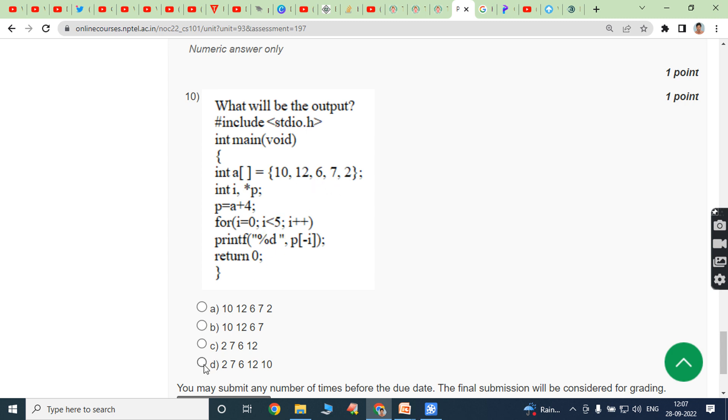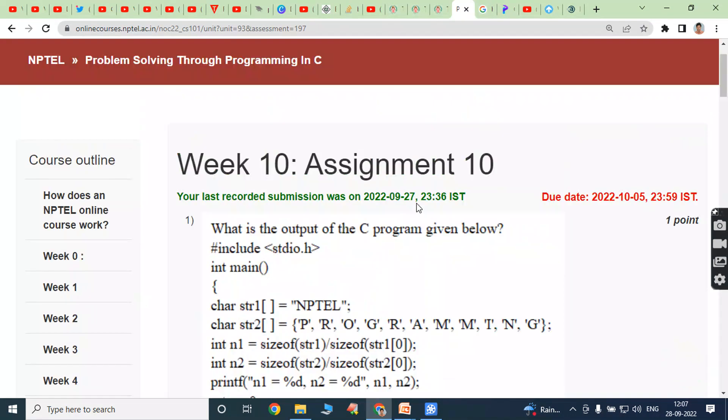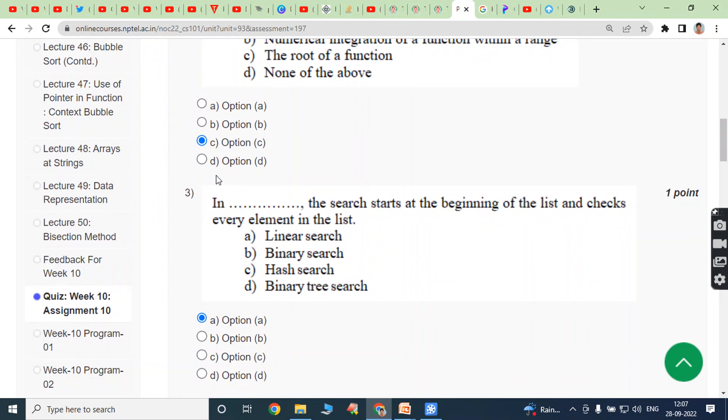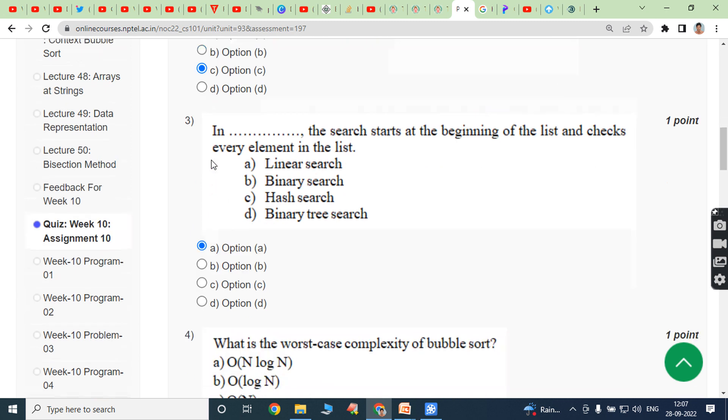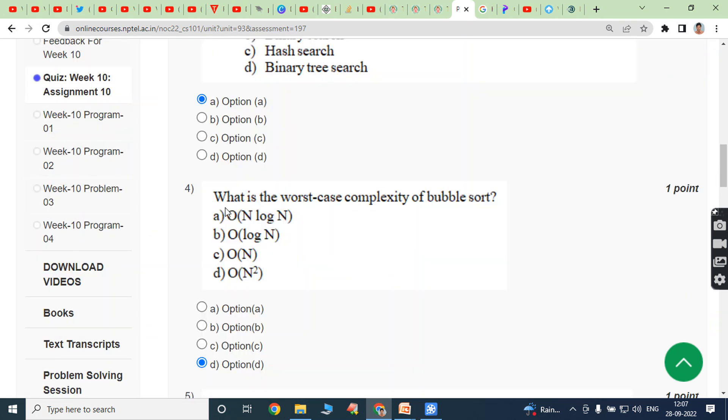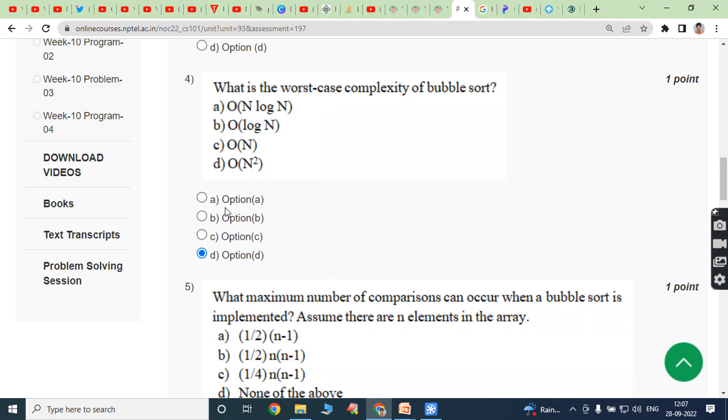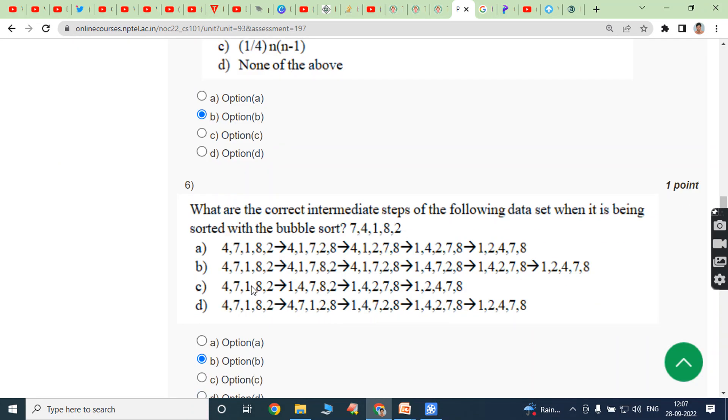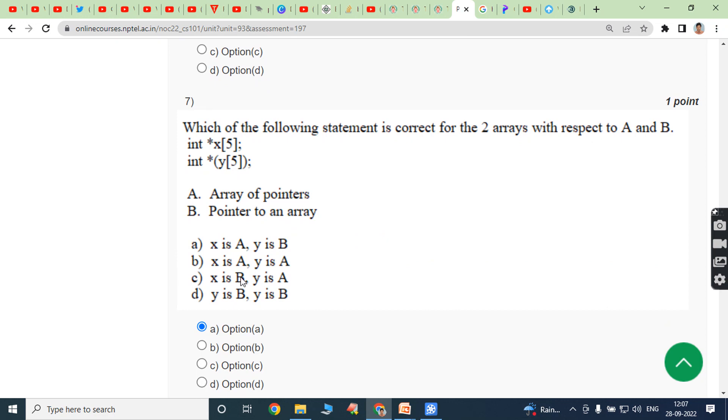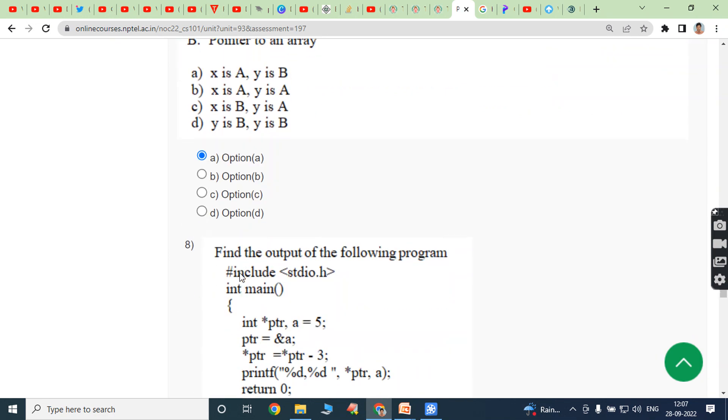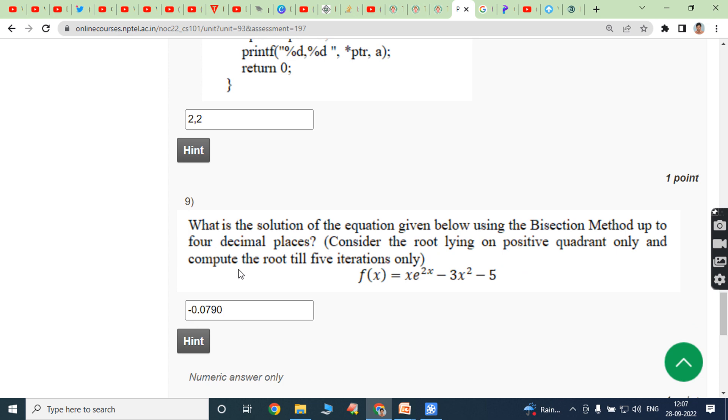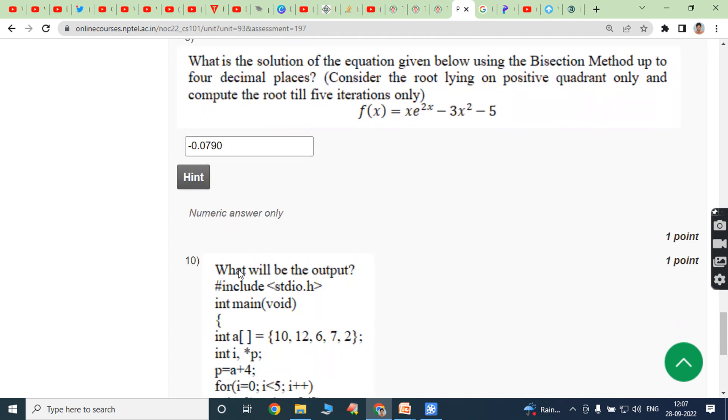Okay, so now see the answers once again. First bit answer is option B. Second bit answer is option C. Third bit answer is option A. Fourth bit answer is option D. Fifth bit answer is option B. Eighth bit answer is two comma two. Ninth bit answer is minus 0.0790, and tenth bit answer is option D.